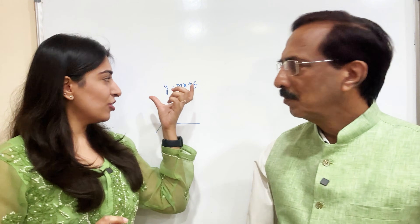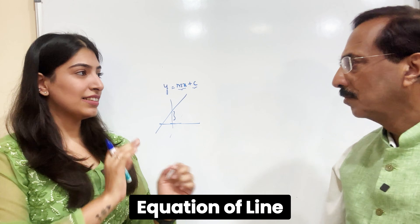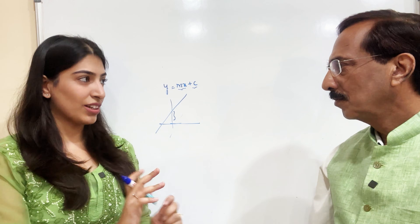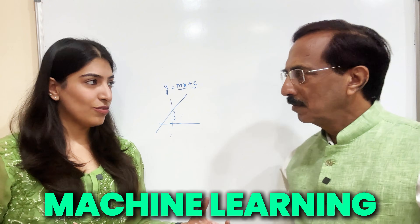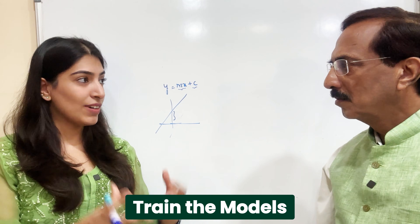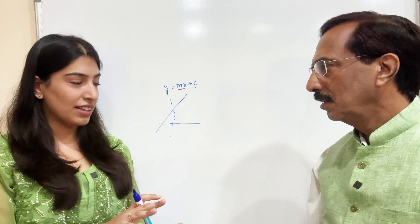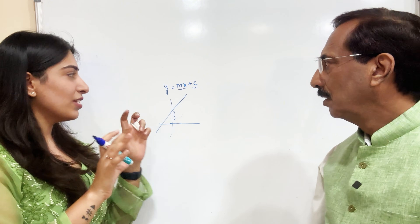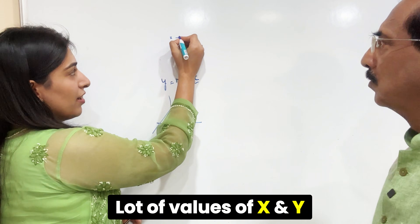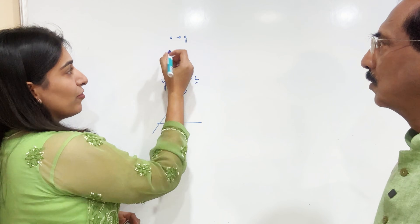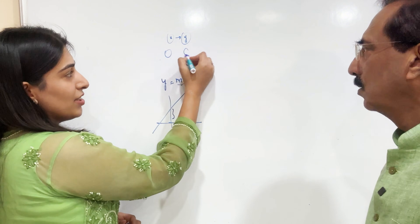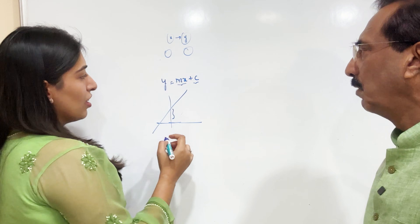Now that you know the equation of a line, let's do something a bit differently. In ML, what do we do? We train our models. We have a lot of data and we train our models. So imagine that I have a lot of values of x and y — for this x value, this is the y value, for this x value, this is the y value. Multiple values.